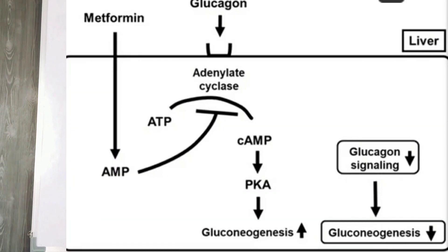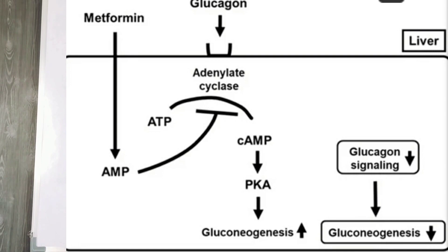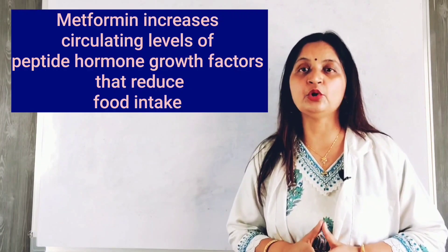Metformin also acts by blocking glucagon signaling. As we can see in this figure, glucagon is responsible for glucose production via gluconeogenesis through the adenylate cyclase enzyme pathway. Metformin inhibits adenylate cyclase, thereby inhibiting the glucagon signaling pathway and decreasing glucose production in the liver. This helps in lowering blood glucose levels.